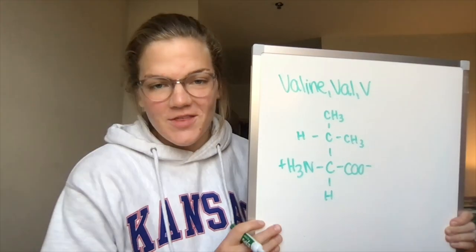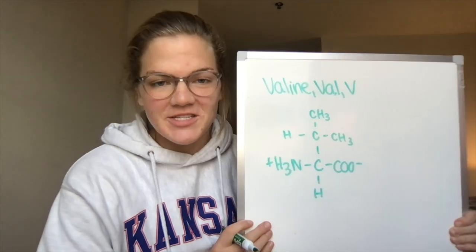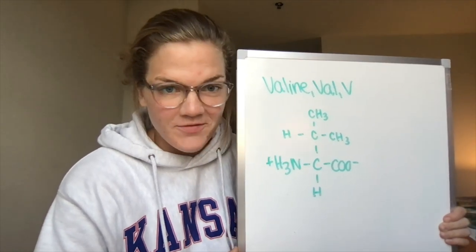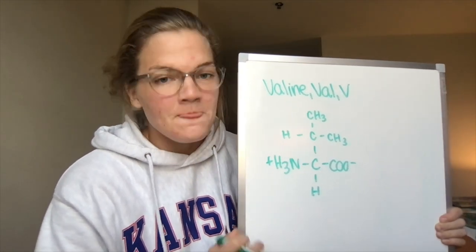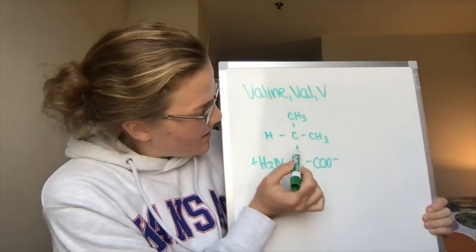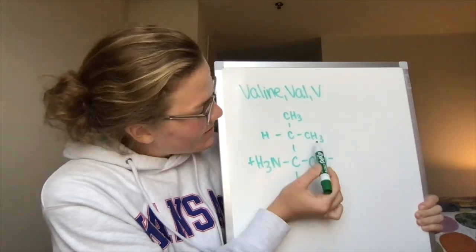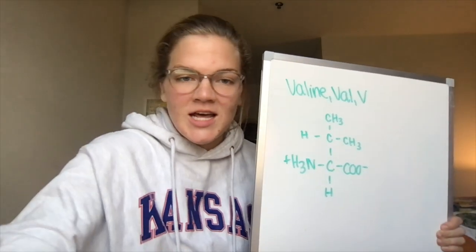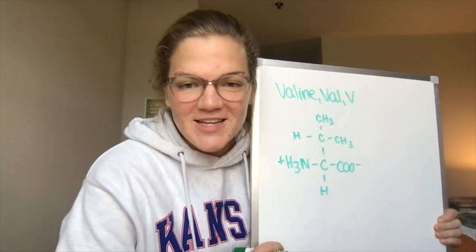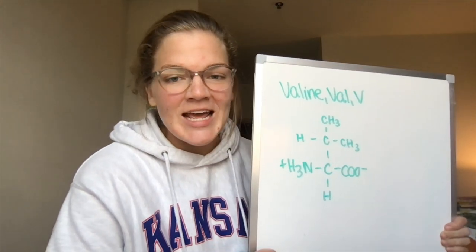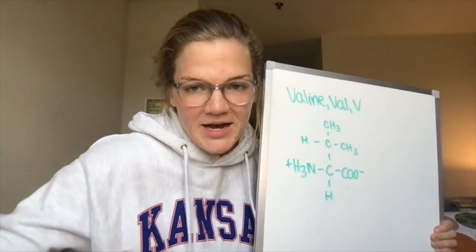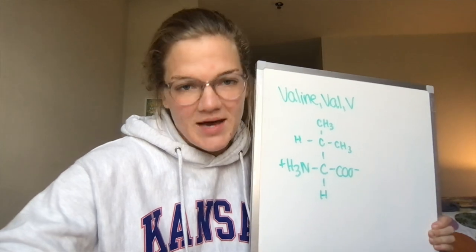Third is valine with a three-letter abbreviation VAL, the one-letter abbreviation of V. For our side chain here, it's a little bit bigger — we've got a carbon with two methyls and a hydrogen attached. Our fun fact about valine is that it is actually a precursor in the penicillin biosynthetic pathway.